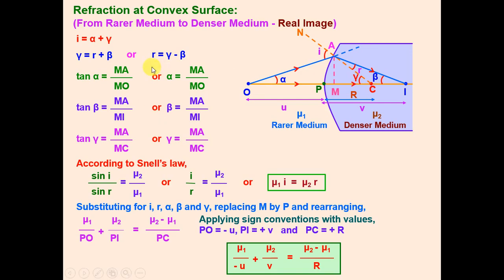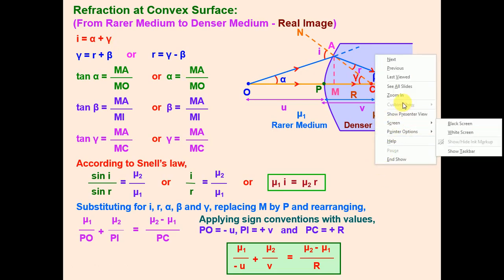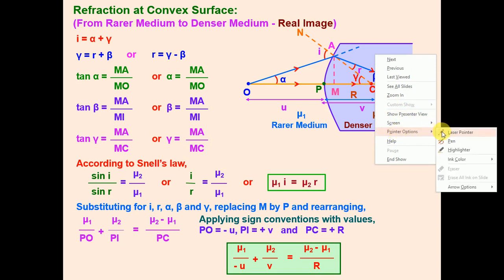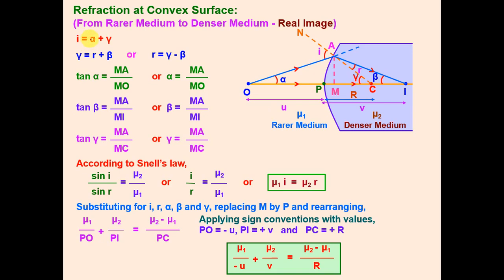To summarize, the derivation follows three steps: Step 1 — write I and R in terms of alpha, beta, gamma. Step 2 — find tangent alpha, beta, gamma in terms of perpendiculars and bases. Step 3 — apply Snell's law, substitute I and R, then substitute alpha, beta, gamma in terms of distances, and simplify to get the result.